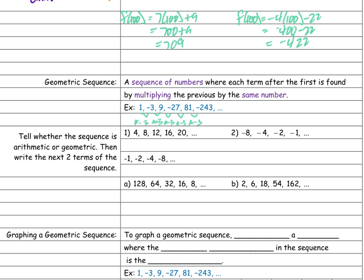Sometimes if I can't figure out what I'm multiplying by, I can take one number and divide by the number before it. So I can take negative 243 and divide by 81 and I get negative 3. If I do that a couple times to confirm I'm getting the same number every time, then I know what I'm multiplying by.